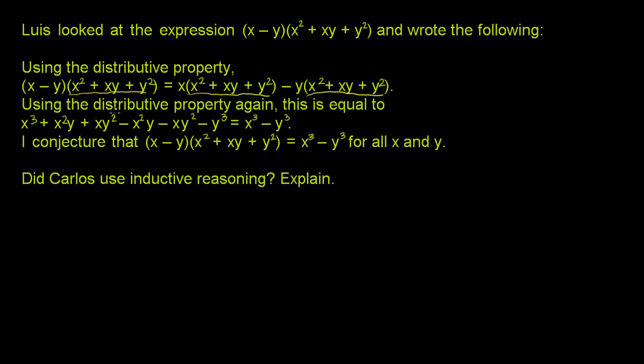Then he says, using the distributive property again, this is equal to, so then he distributed this x into that and got all of the first three terms here. He got these first three terms and then he distributed the y. He distributed the y over here and he got these three terms.